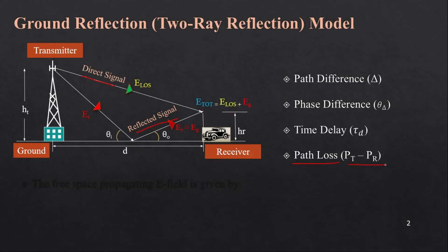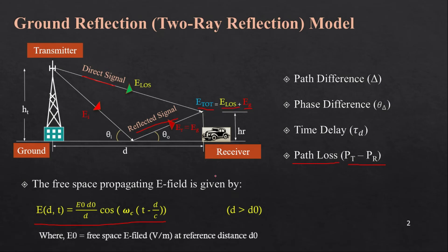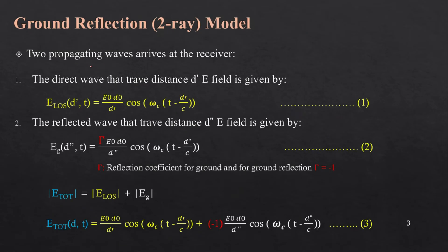Path loss is the transmitted power minus the received power. The free space propagating electric field is given by: E = E0*d0/d * cos(omega_c * t − d/c), where E0 is the free space E-field at reference distance d0, and d is the distance between transmitter and receiver. Based on this equation, the line-of-sight electric field E_LOS with distance d' at time t is: E_LOS = E0*d0/d' * cos(omega_c * t − d'/c).